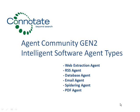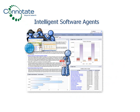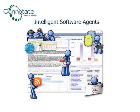Agent Community Gen 2 — Intelligent Software Agent Types. Imagine the ability to train a virtual team of tireless laborers to work on your behalf 24-7. Imagine a team of intelligent software agents that can do anything you can do to monitor,